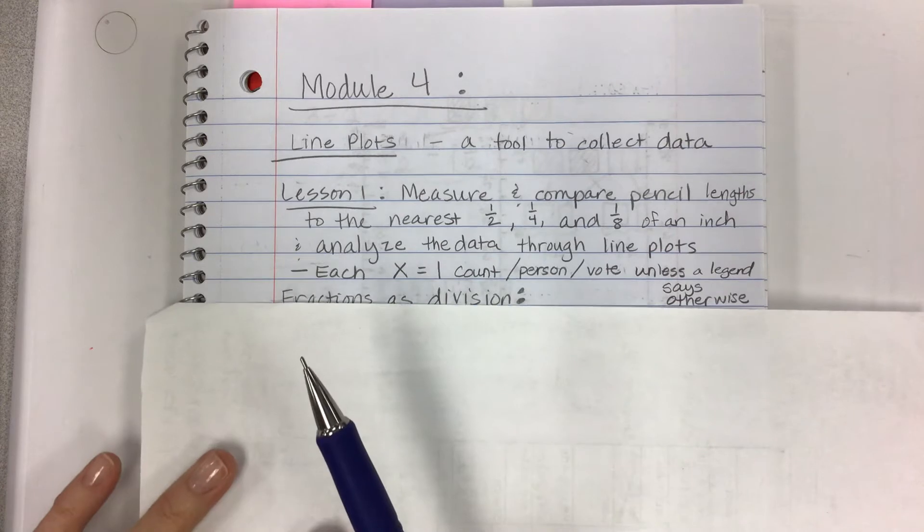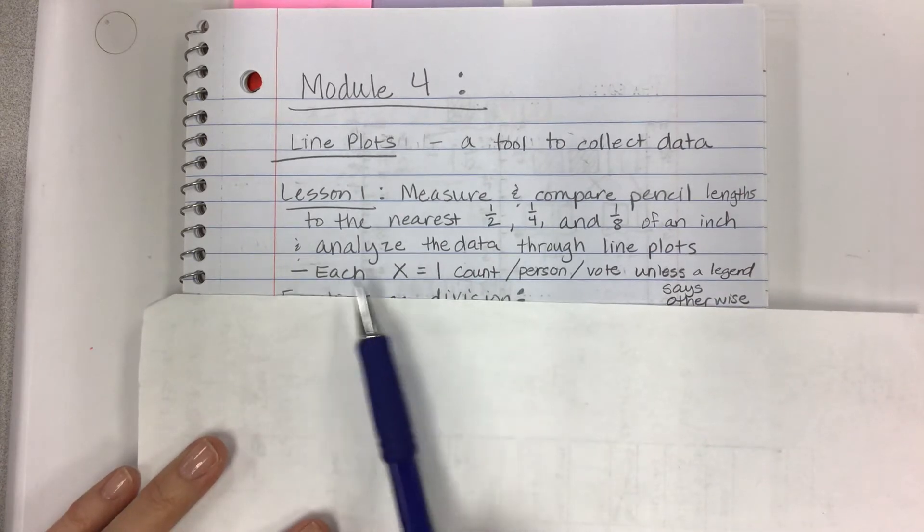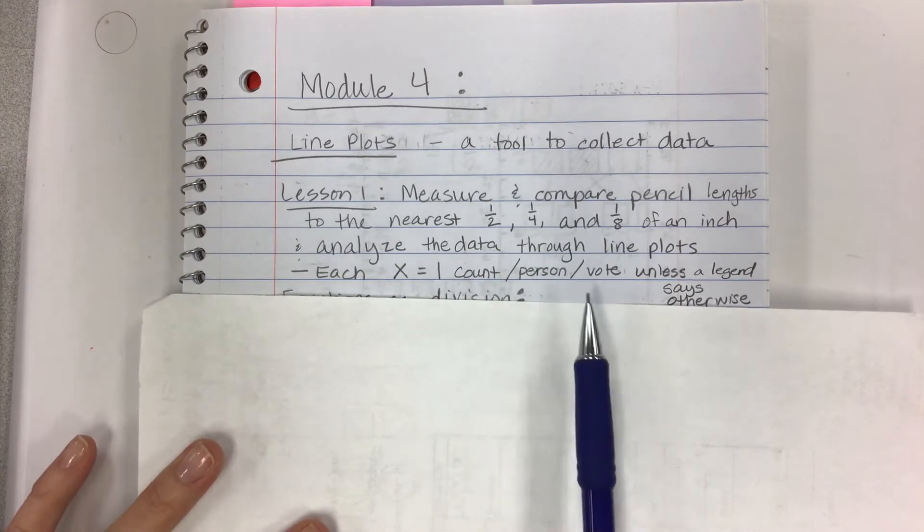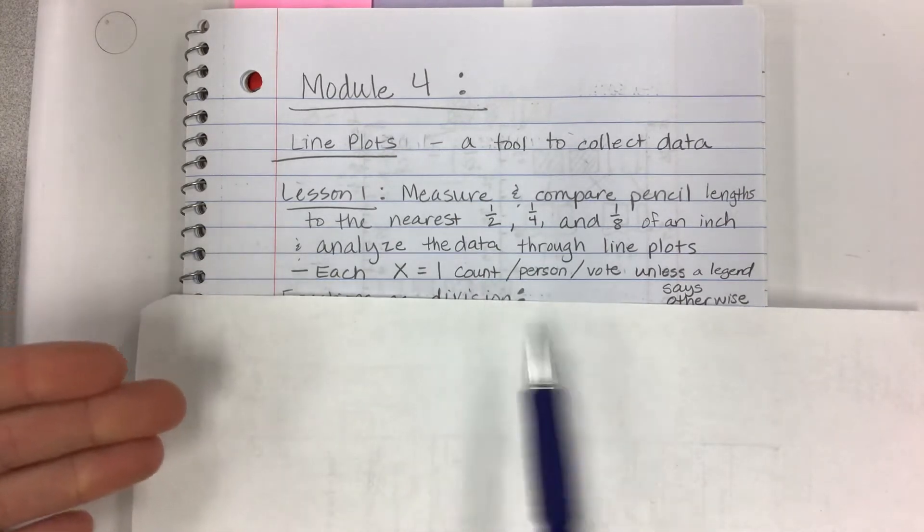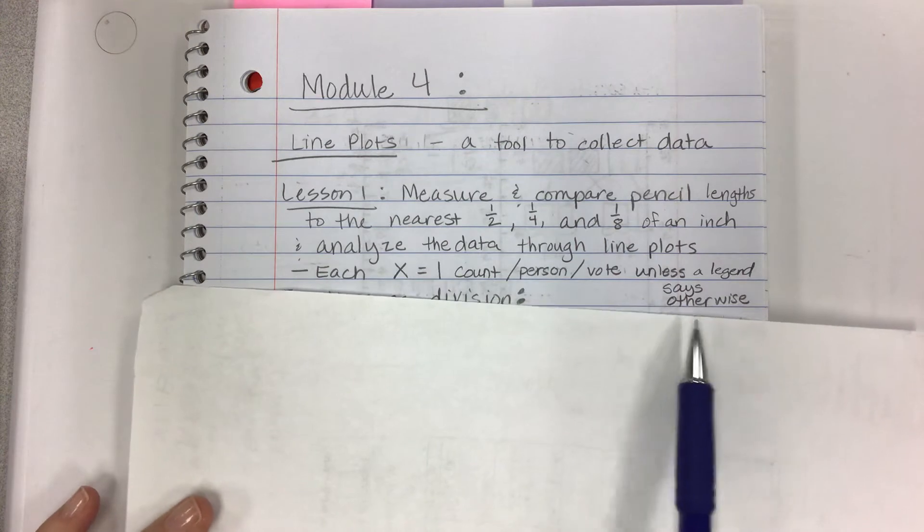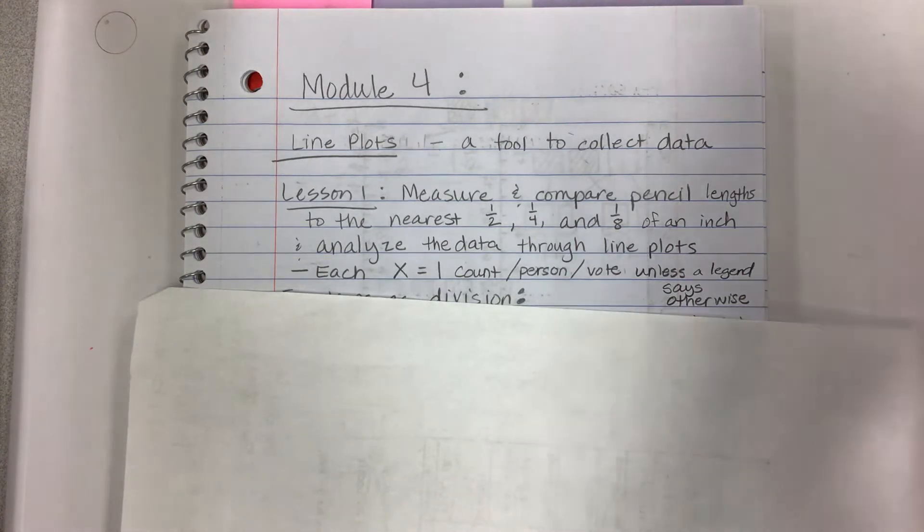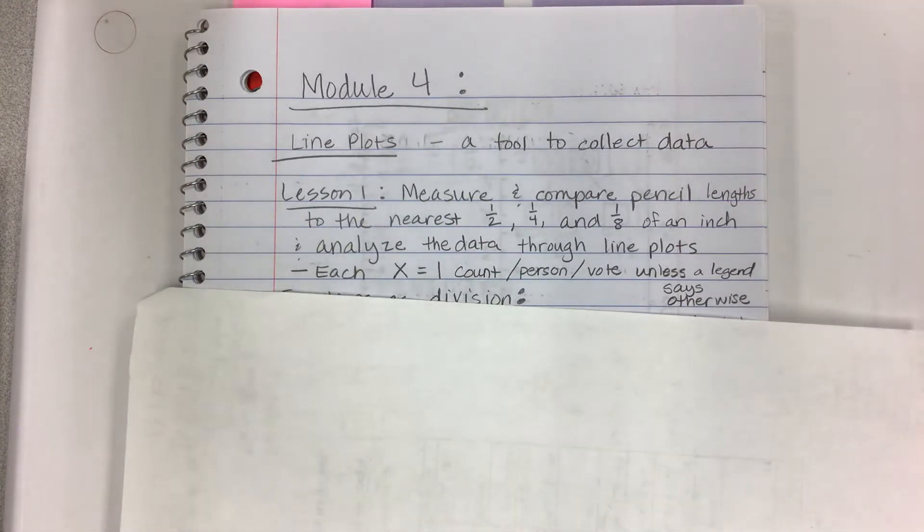Now in a line plot, each X counts as one person, one vote, it's one count of whatever it is, unless there's a legend and it says each X equals two votes or something weird like that, which you never really know. It's just like when we get into graphing, there might be a different representation. So that's what's coming up.